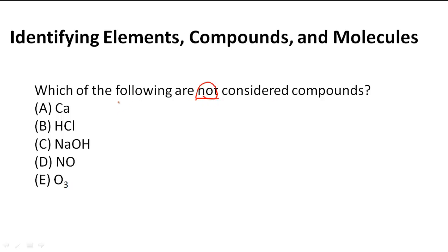Let's take a look at the answer choices we have. We have Ca which stands for calcium, HCl which stands for hydrogen and chlorine, NaOH or sodium, oxygen, and hydrogen, NO nitrogen and oxygen, and O3 which is three oxygen atoms.